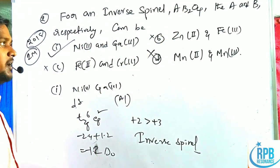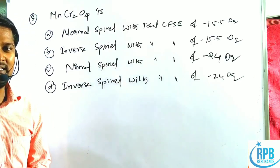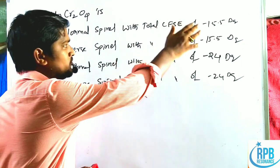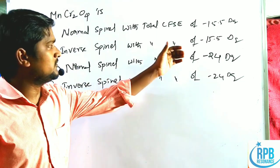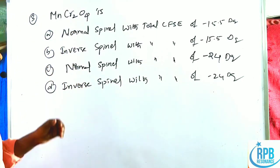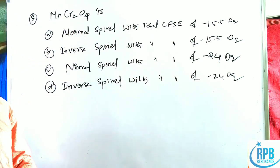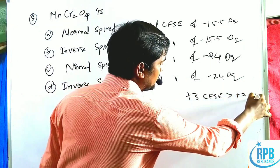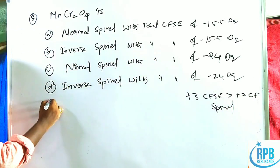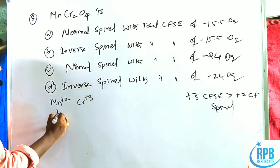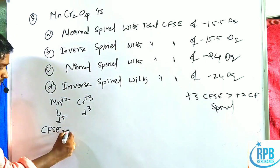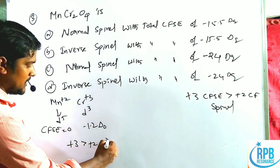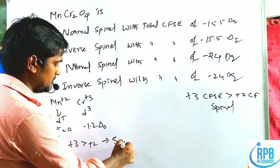Now for the third problem: MnCr₂O₄ — is it a normal spinal with total CFSE −15.5 dq, inverse with −15.5 dq, normal with −24 dq, or inverse with −24 dq? First we determine the type: Mn²⁺ is d⁵ (CFSE = 0), Cr³⁺ is d³ (CFSE = −1.2 ΔO). Since B³⁺ CFSE > A²⁺ CFSE, the structure is a normal spinel.